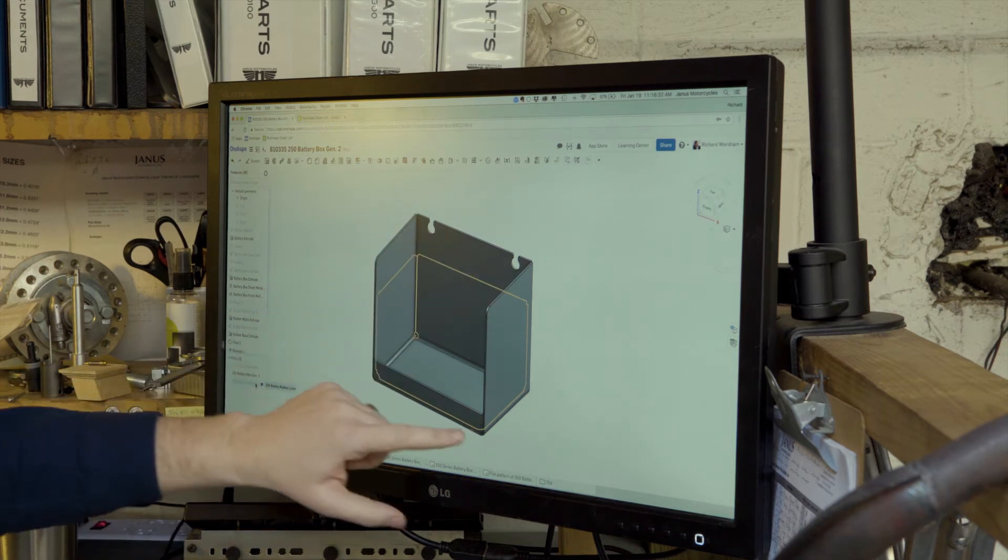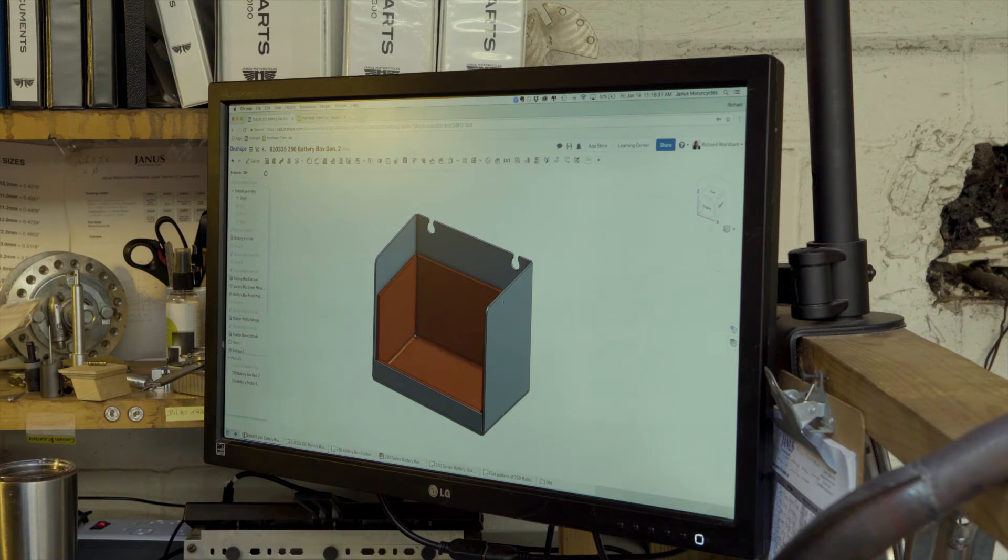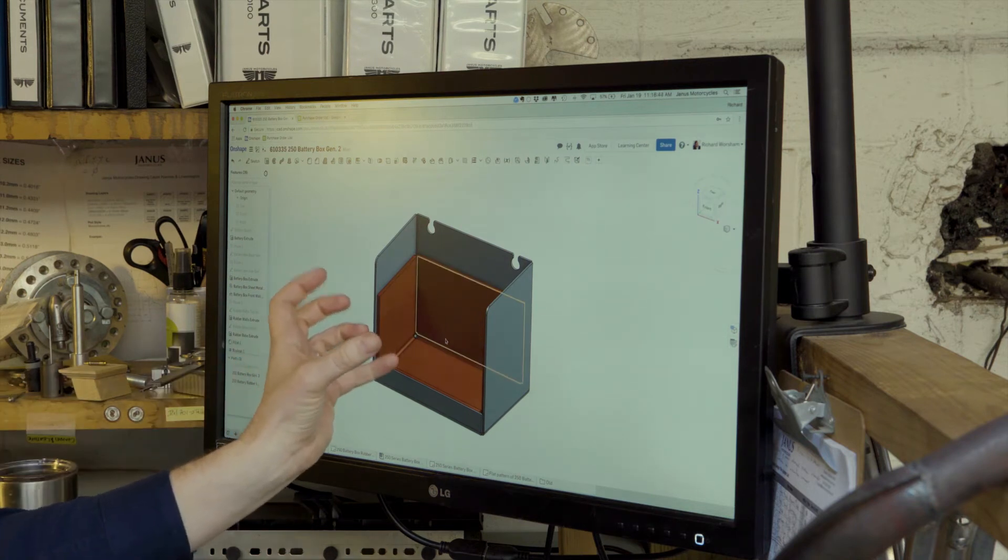In addition to the actual stainless steel structure of the battery box, there's a rubber liner that protects the battery from shock and just provides a nice place for it to be held.